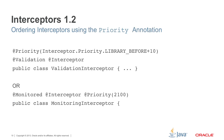Here are two examples of using priority. One uses the predefined values, the other uses a raw value. The first is a library interceptor that sets priority to LIBRARY_BEFORE plus 10. The second interceptor simply sets priority to 2100, independent of what other interceptors are doing.